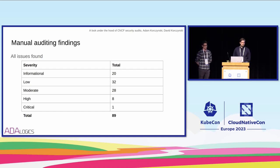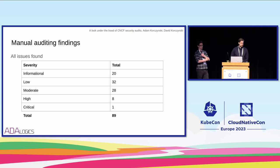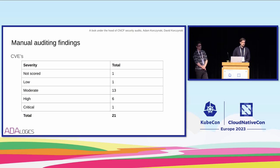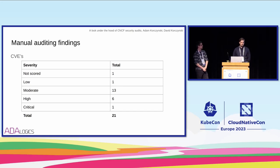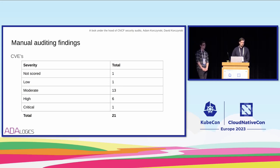To go through the breakdown: 20 informational, 32 low, 28 moderate security issues, one high, and one critical — and this critical was a security vulnerability. Of the 89 security issues, 21 CVEs were assigned. One was not scored — that was actually a security vulnerability in Golang that was found during the Istio audit, and Golang doesn't score the vulnerabilities. Then we found one low CVE, 13 moderate, six high, and one critical.